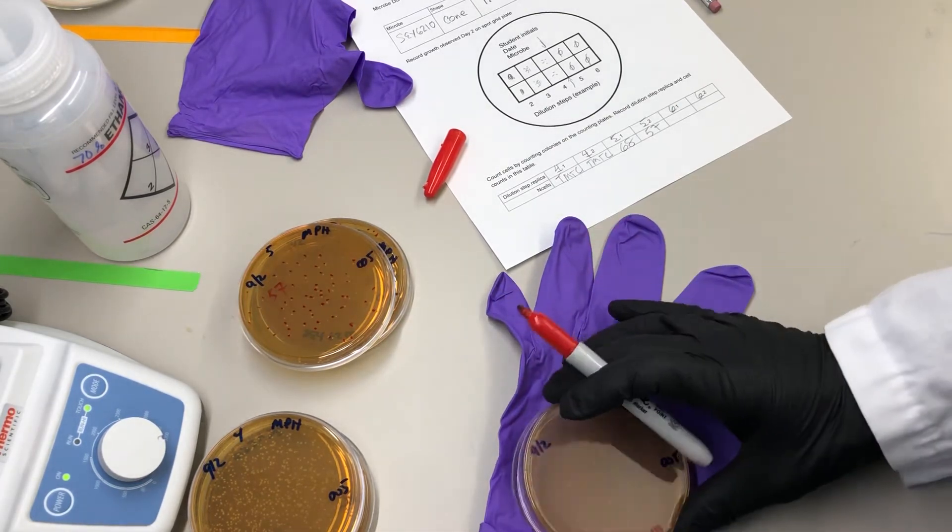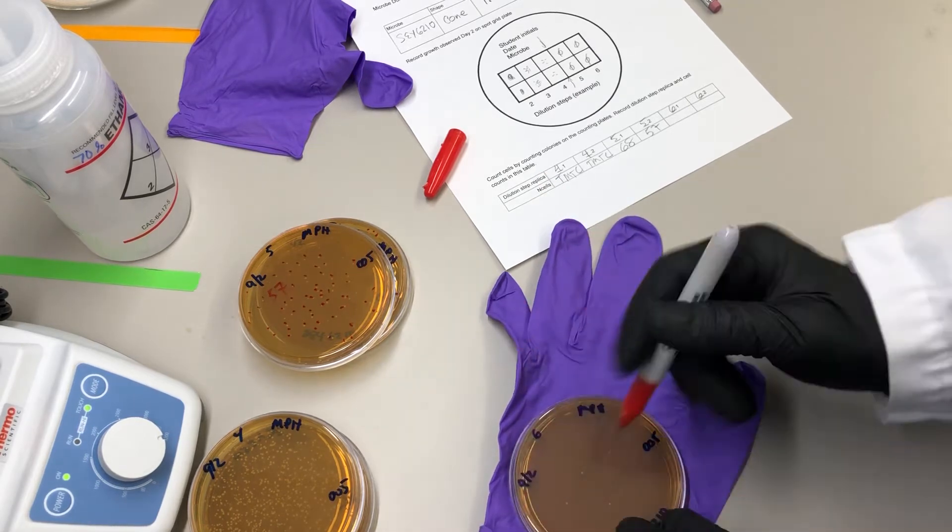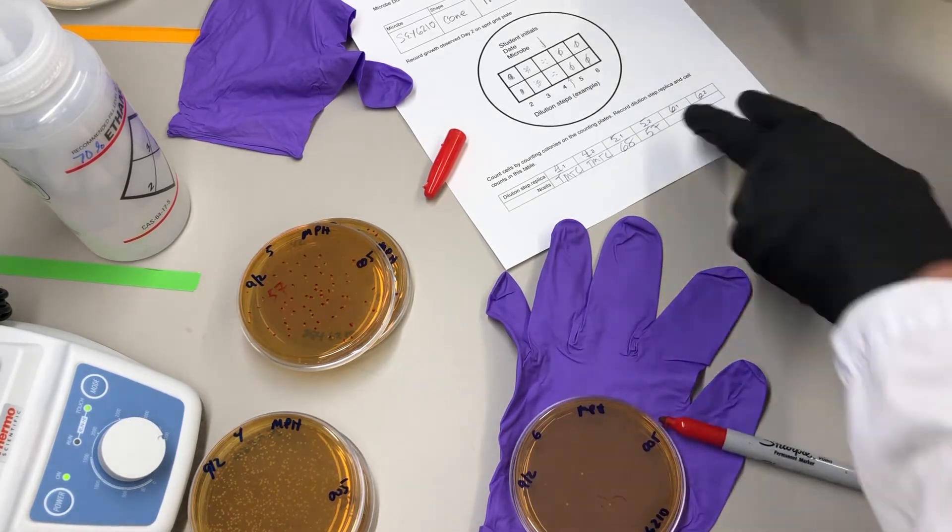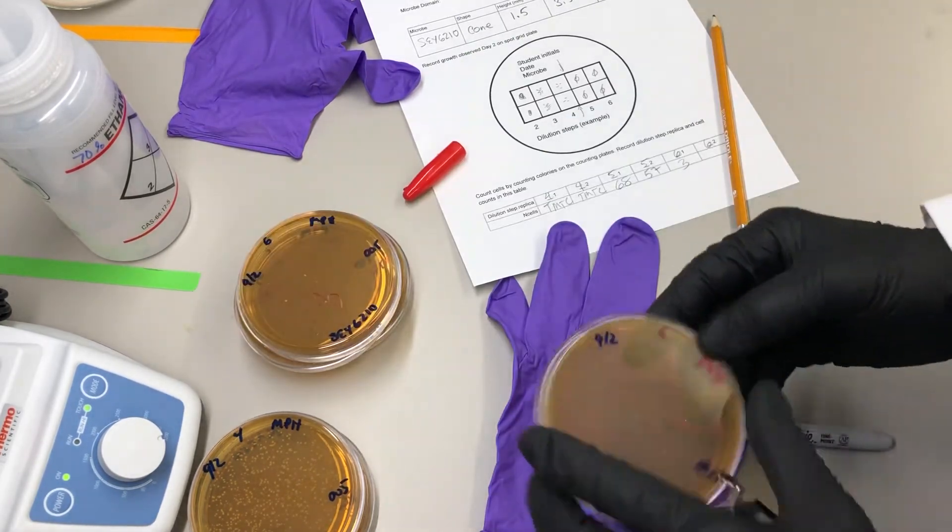Now this is a little bit easier, you can just look at the plate, there's three here. I don't need the counter to count three colonies. Same thing here.